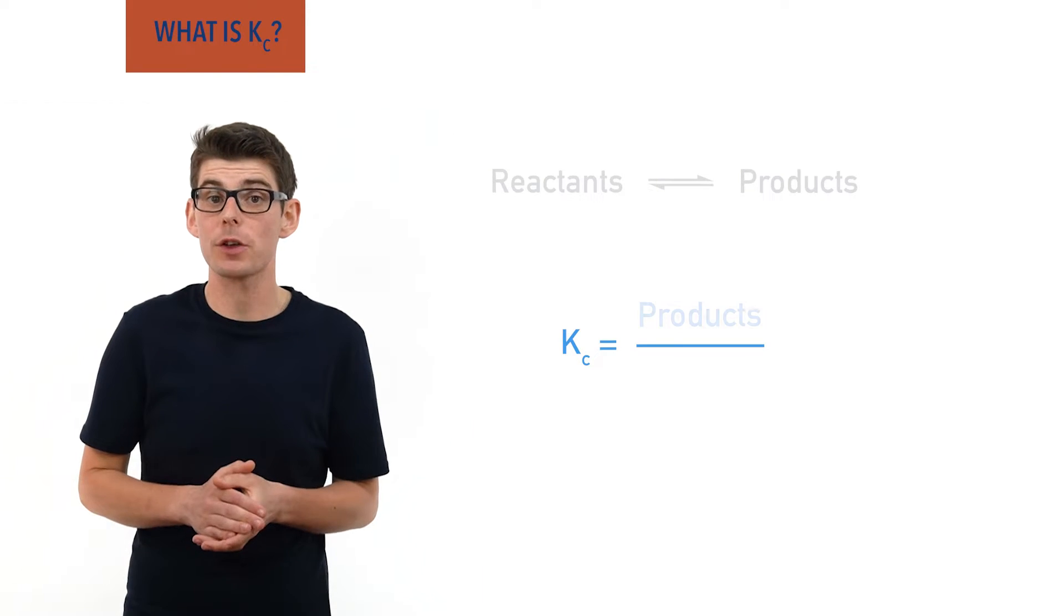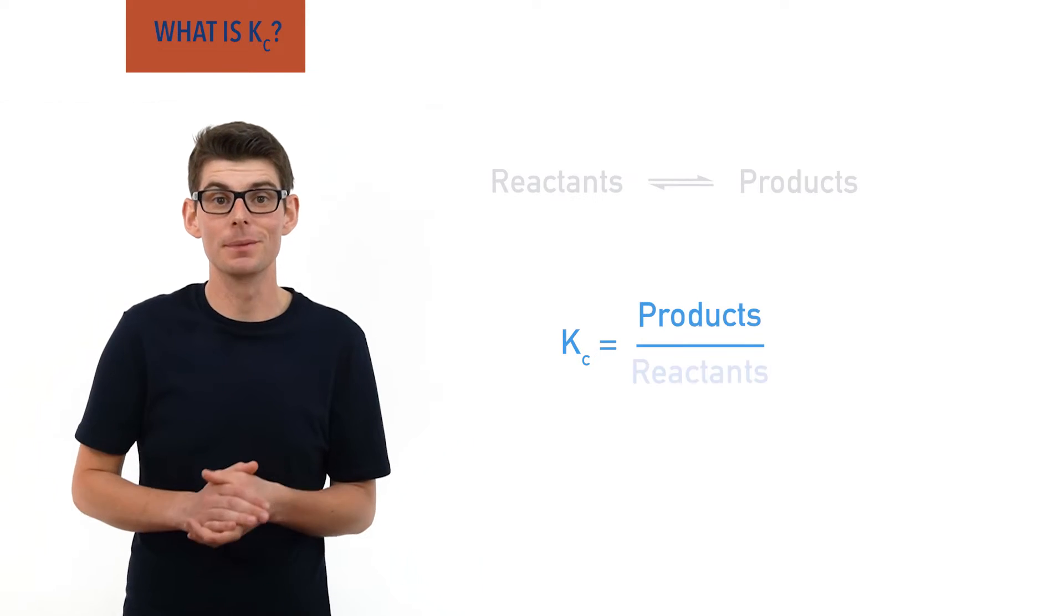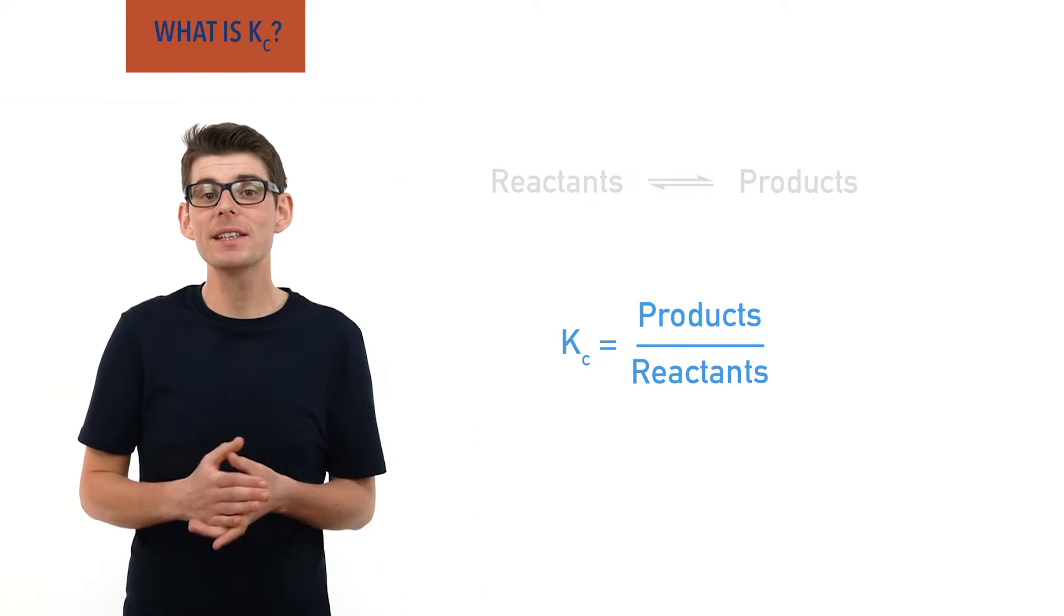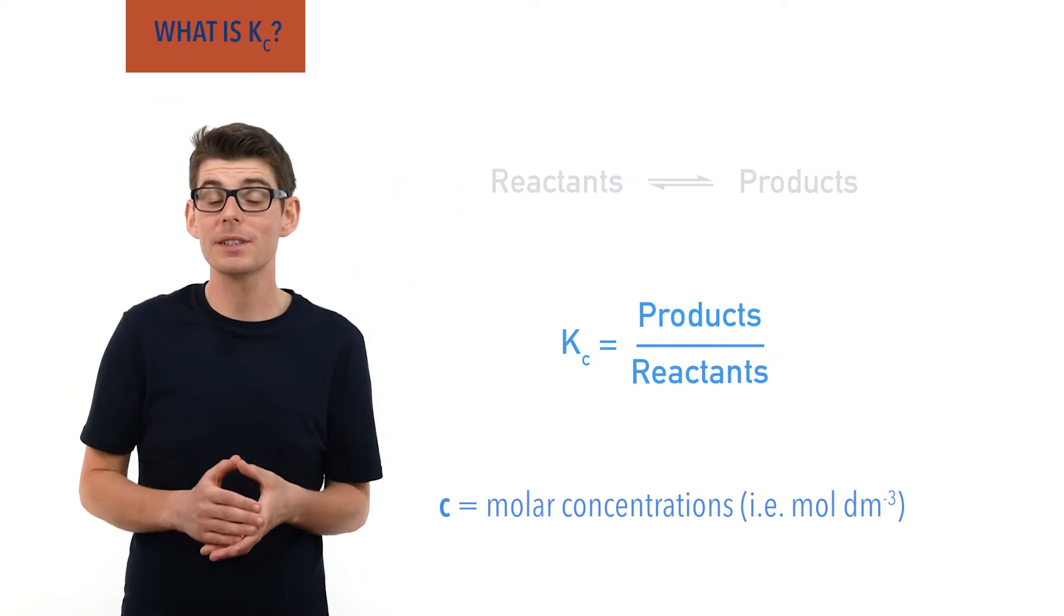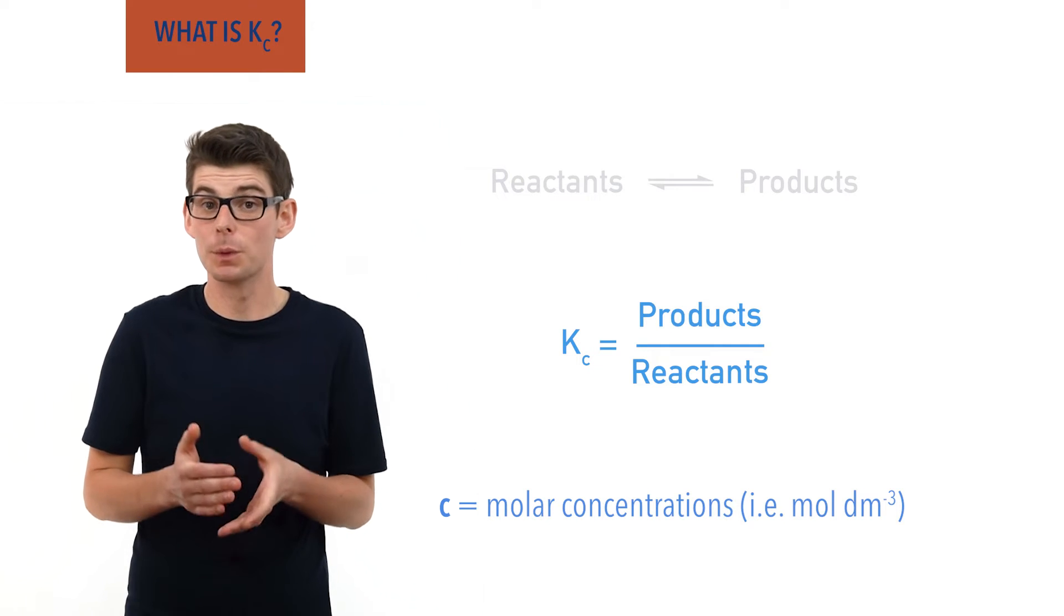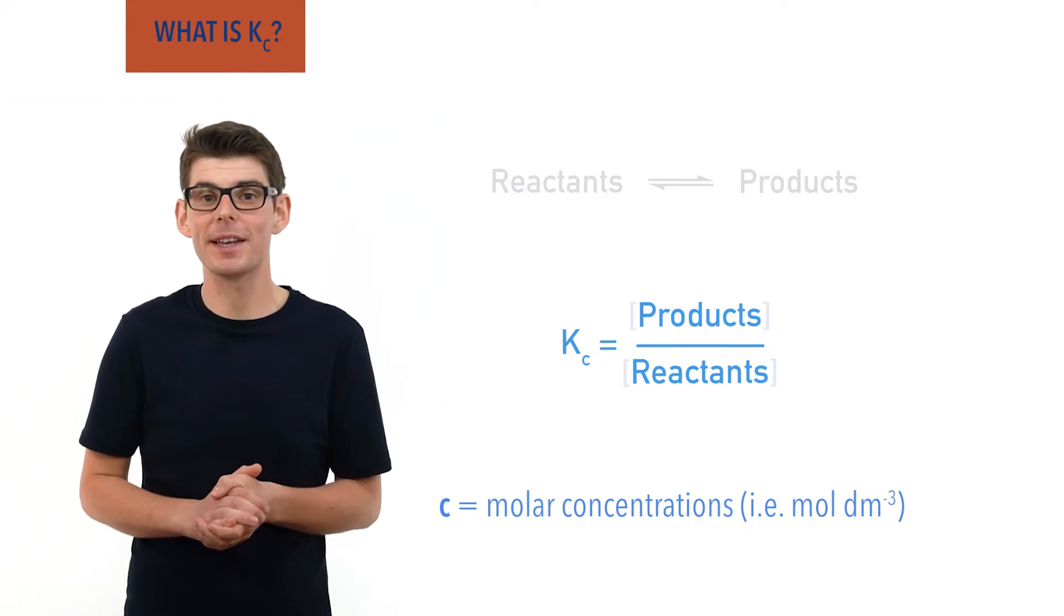Products go on the top of the fraction and reactants on the bottom. We are basing the ratio on the molar concentrations of everything present at equilibrium, and we show concentration in chemistry using square brackets.